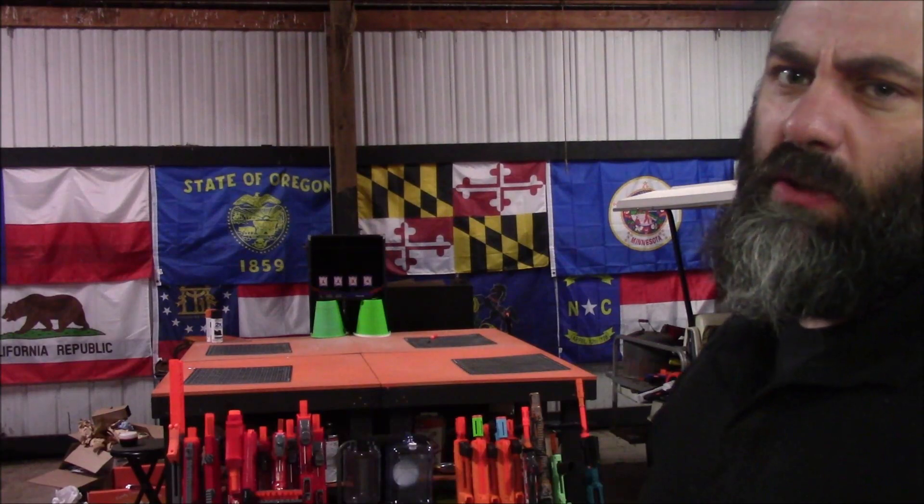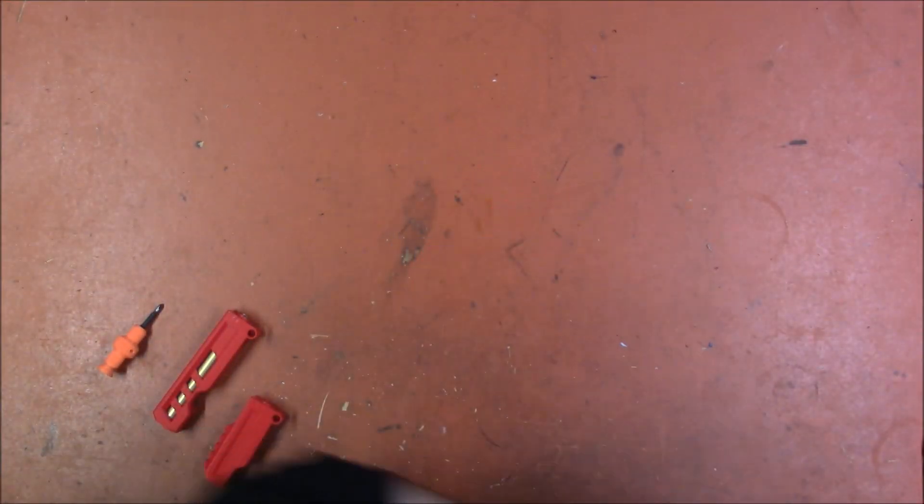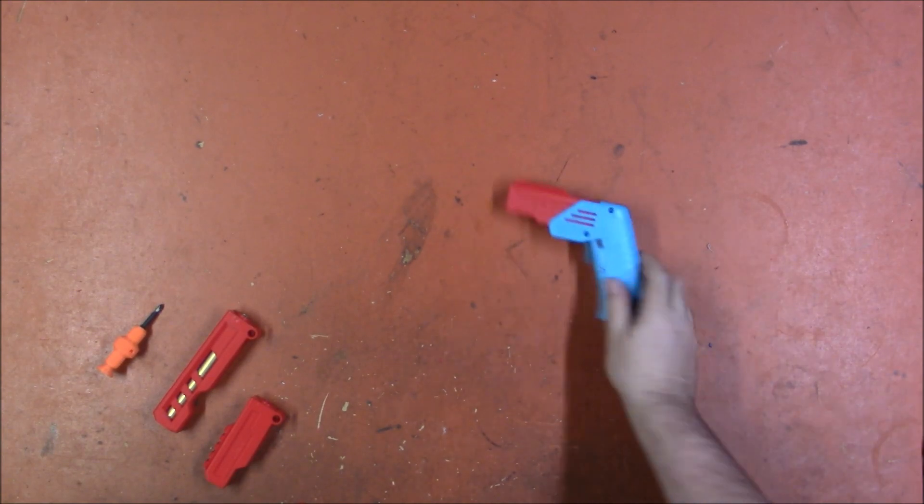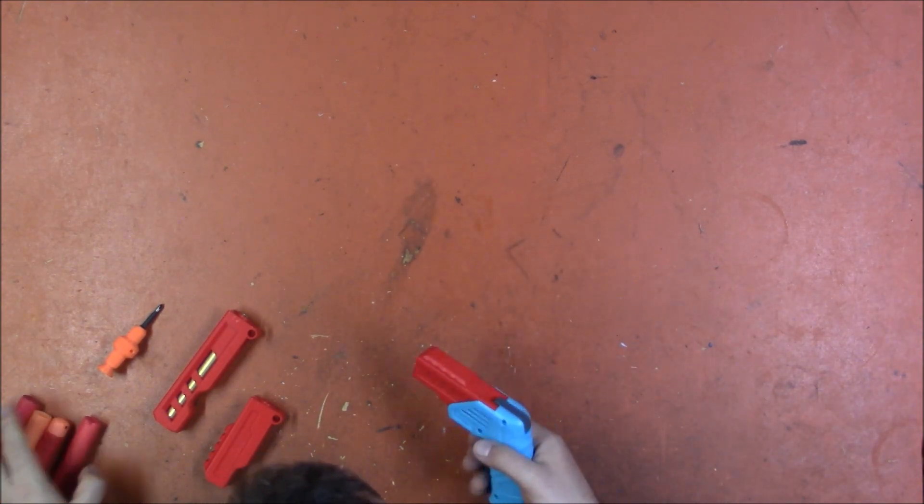But I really want to see that mega barrel. So let's do that. Alright. I'm gonna grab a mega dart and chrono this thing. It does not want a chrono. It keeps giving me errors. But I'm getting around 50, 55. So it's definitely much less powerful. I'm wondering if it's not getting as good of a seal.